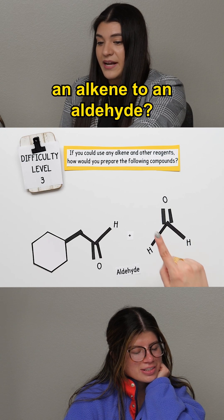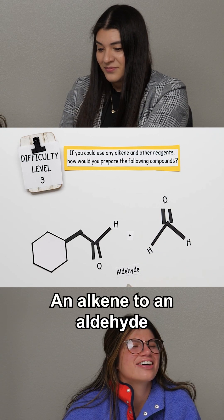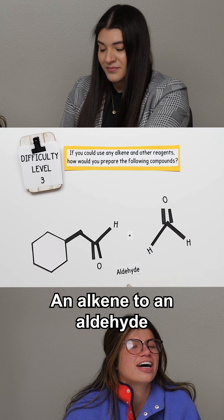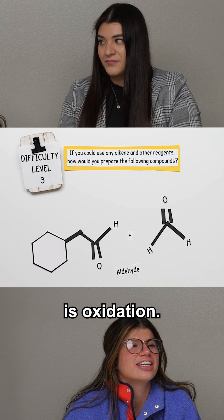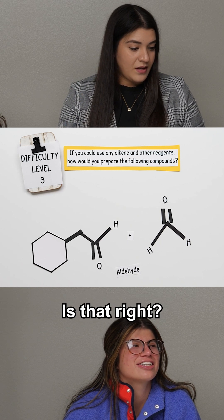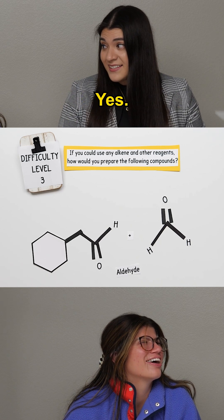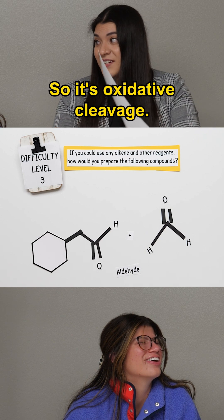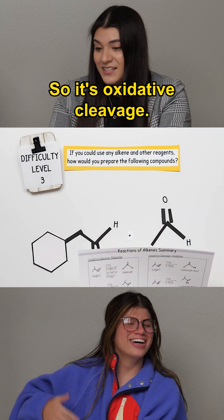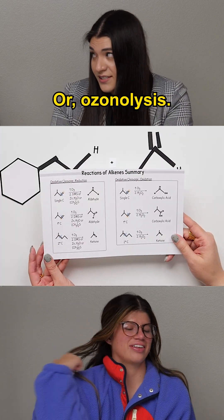What allows us to go from an alkene to an aldehyde? An alkene to an aldehyde is oxidation. Is that right? It is a form of oxidation, yes. So it's oxidative cleavage or ozonolysis.